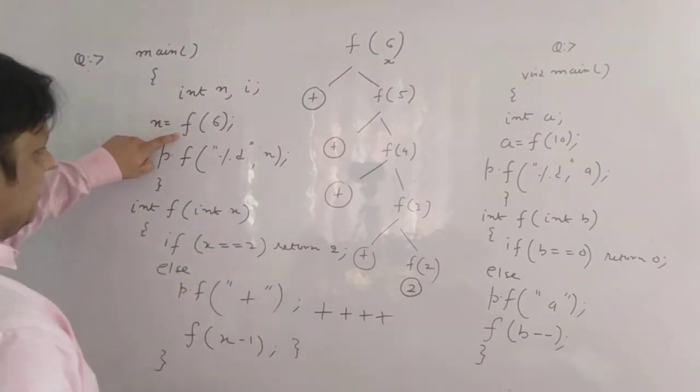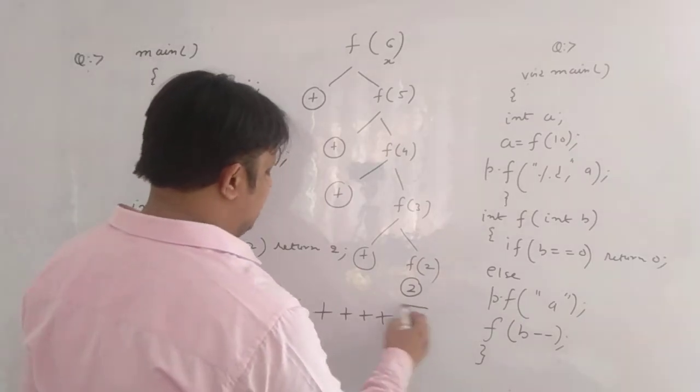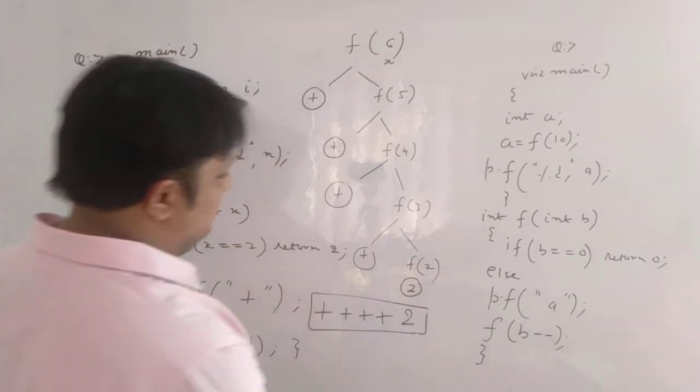So 2 is getting stored in this function. So n, that 2 gets printed. So that's the answer. Fine?